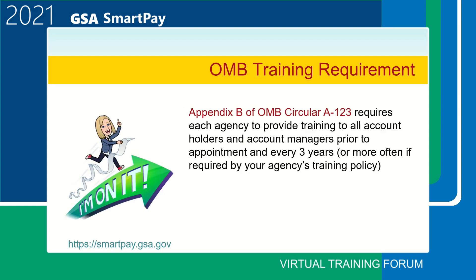Let's talk about the OMB training requirements. If you are not familiar with Appendix B of OMB Circular A-123, in general it serves as a framework for agencies to best manage their government charge card programs. The circular requires each agency to provide initial training to all account holders and account managers prior to appointment and then at a minimum every three years thereafter. This may be required more frequently depending on your agency's training policy. Appendix B of OMB Circular A-123 can be found on the GSA SmartPay website under policies.